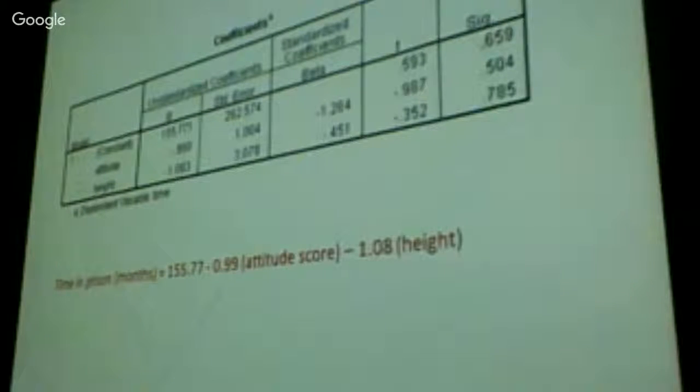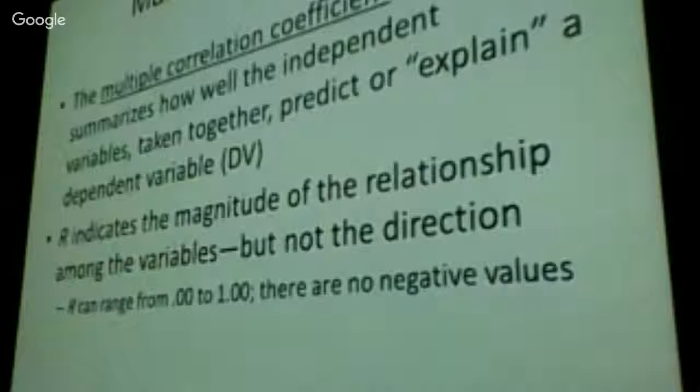Well, think about it. I'm saying that I predicted the time in prison based upon attitude score. Now, it's not going to be a perfect measurement. There are other things involved there that are created by residuals. And the residuals is the difference between what I predict and what I get. One of those other things involved is height. So now, I've tightened my line a little bit. By tightening the line, I've changed the way in which attitude predicts time in prison.